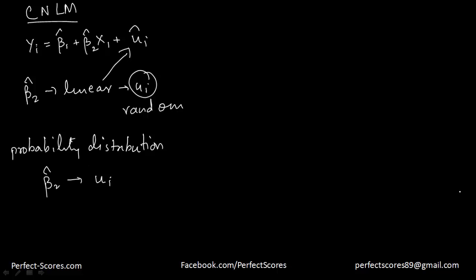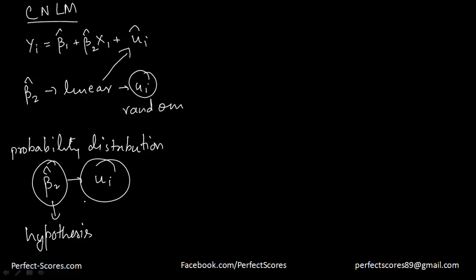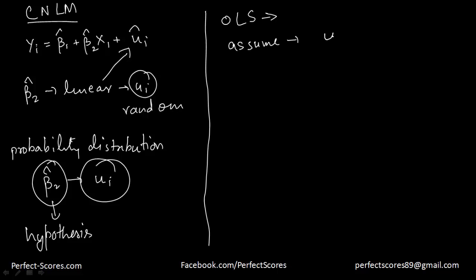Since the probability distribution of the population parameters is very, very important in hypothesis testing, it becomes extremely important that we find the probability distribution of the error term as well. The OLS method does not account for any probability distribution of the population parameters or of the error term, so it becomes extremely important for us to actually assume some kind of probability distribution for the error term.